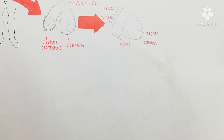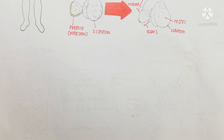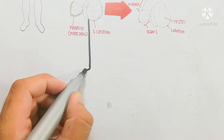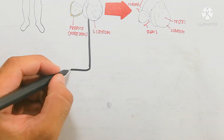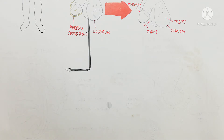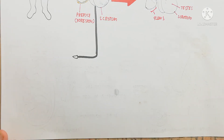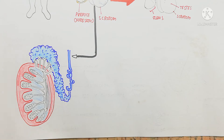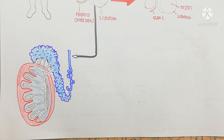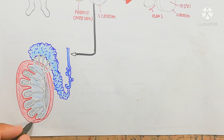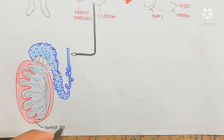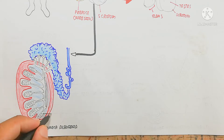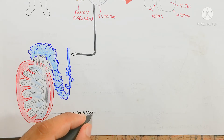The testis is made up of different seminiferous tubules, which we will discuss later in this video. The testis is made up of the vas deferens, which is the duct or ductus deferens. Here in blue color is the epididymis — the head of the epididymis, the body of the epididymis which is the middle region, and the tail of the epididymis is the tail region. The tail becomes the vas deferens.